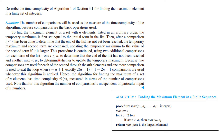That is: one comparison, i ≤ n, to determine that you have not reached the end, and another, max < a_i, to determine whether to replace the temporary maximum. Because two comparisons are used for each of the second through nth elements, and one more comparison is used to exit the loop when i equals n+1, exactly 2(n−1) comparisons for elements two through n, plus one last comparison — distributing gives 2n − 2 + 1 = 2n − 1 comparisons are used.